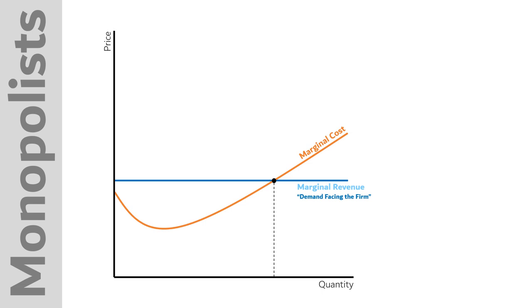To understand why a monopolist charges more for their product, we need to evaluate their cost curves. Here is the normal situation, where price is on the vertical axis and quantity is on the horizontal axis.